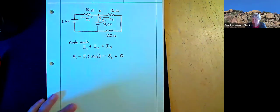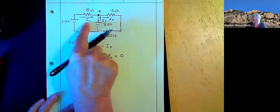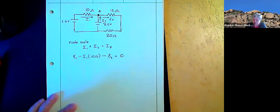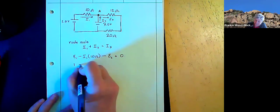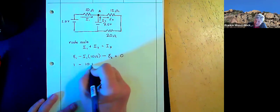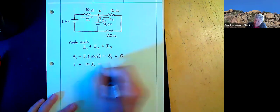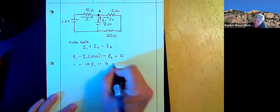That's my loop rule. And since I'm only wanting that one, I just can solve that right there. I get 1 minus 10 I1 minus 7 is equal to 0.